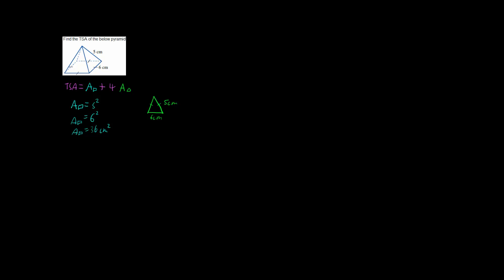So what we need to do is use Heron's formula. Heron's formula uses a working variable called s, which is half of the three sides added together: s = ½(a + b + c). Then the area of the triangle is the square root of s times (s minus a) times (s minus b) times (s minus c).